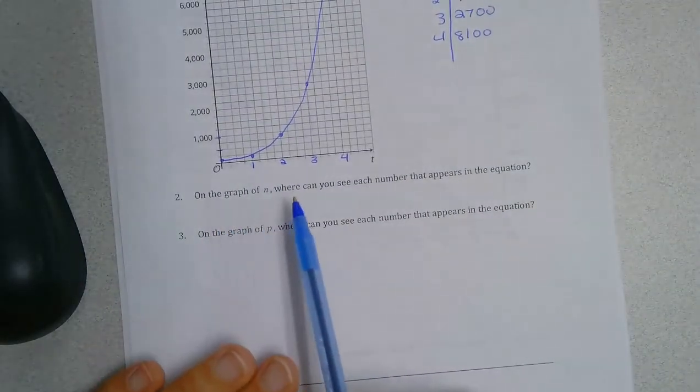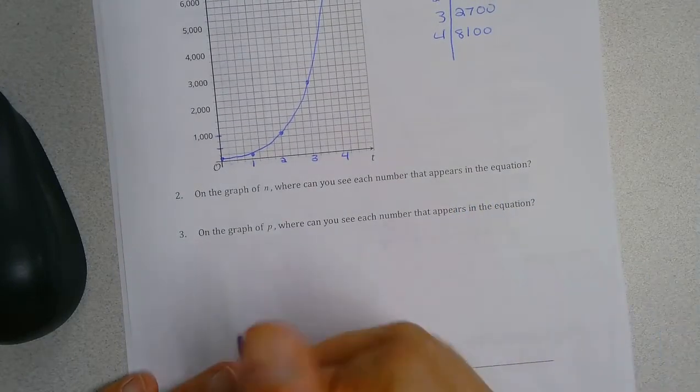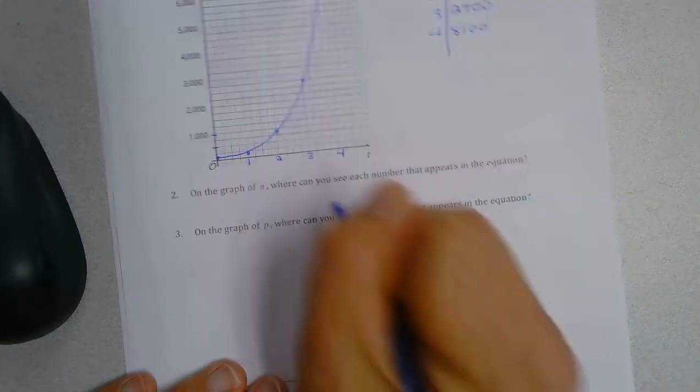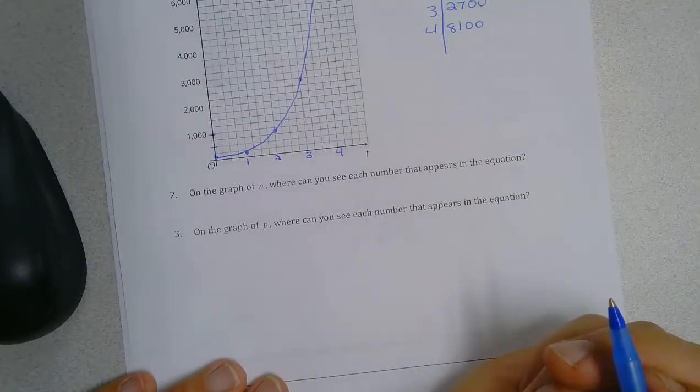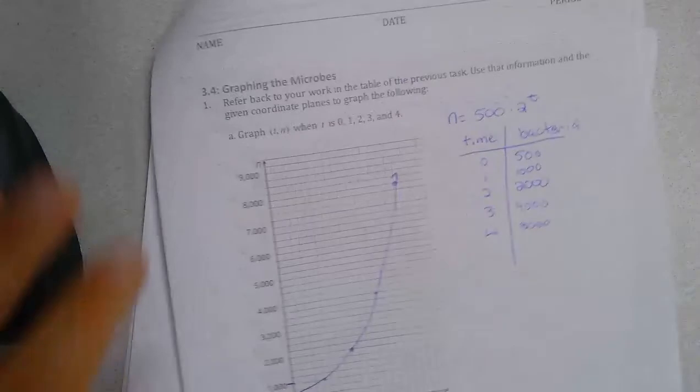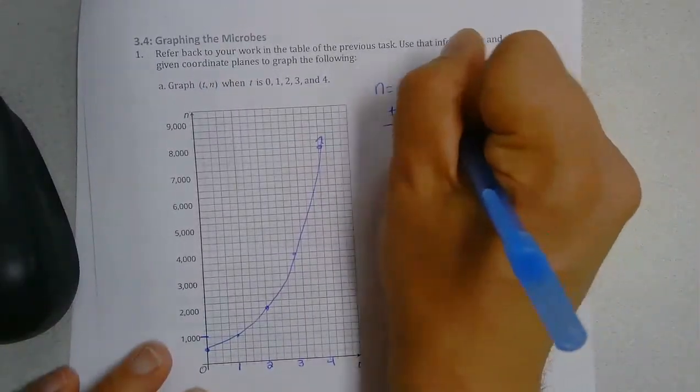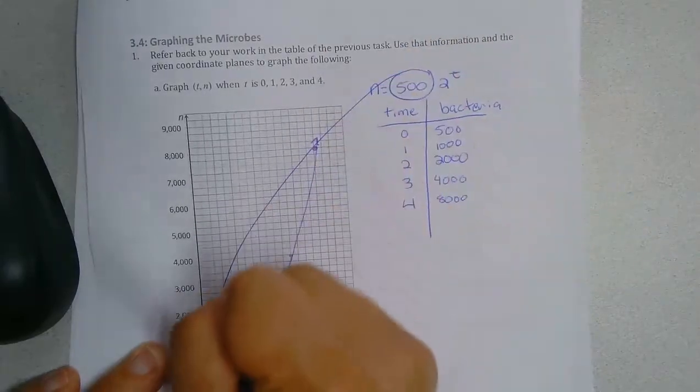So on the graph of n, where do you see each number that appears in the equation? So if we're looking at this first one, 500 is our initial value.